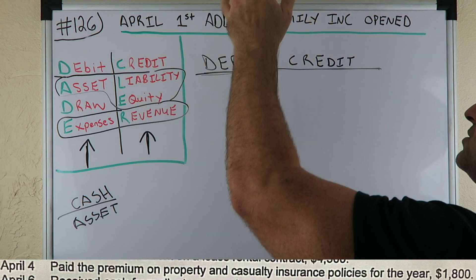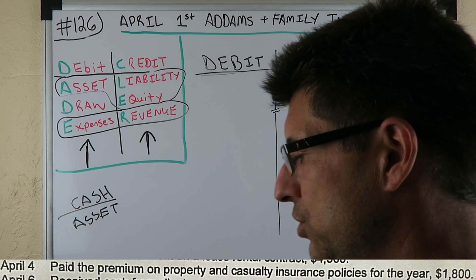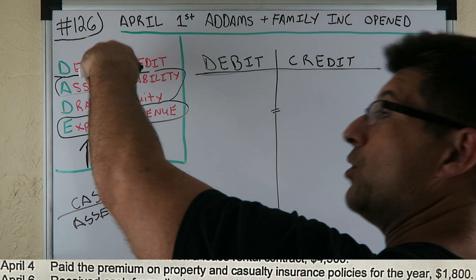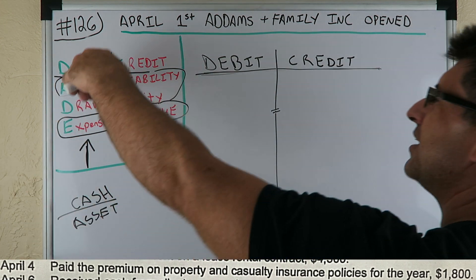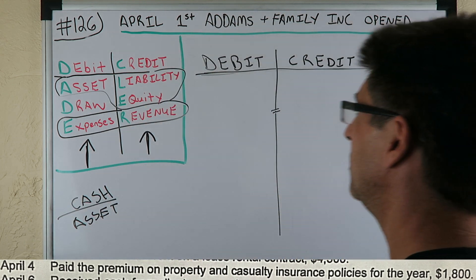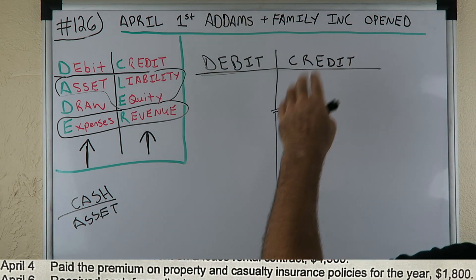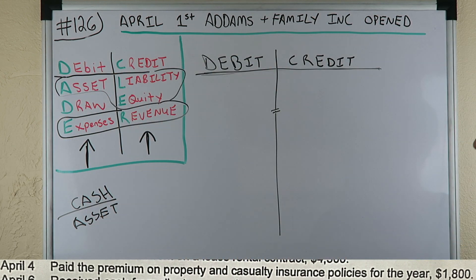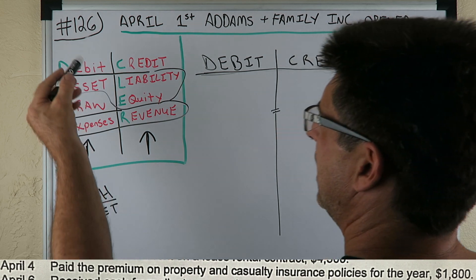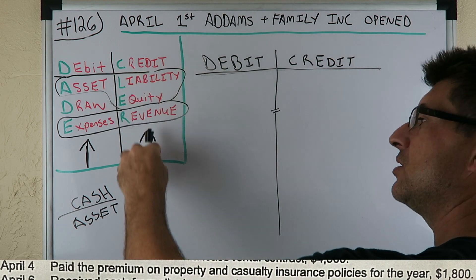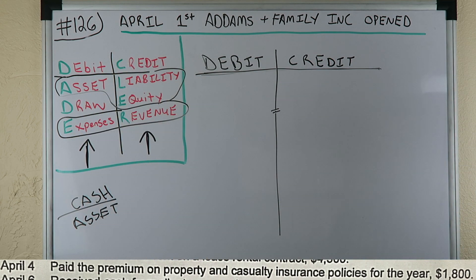On April 1st, Adams and Family Inc. opened, and we're doing the accounting cycle practice. You've got debits, credits, asset draw expense — debits equal credits, debits on the left, credits on the right. Depending on whether assets, draws, expenses, liabilities, equity, or revenue are increasing or decreasing will determine whether they are debited or credited.